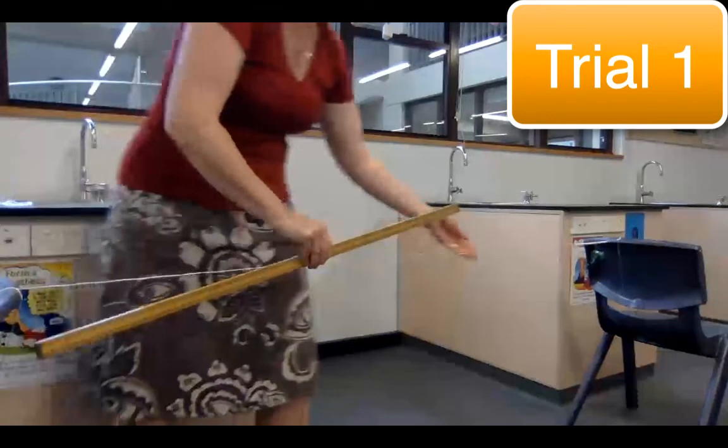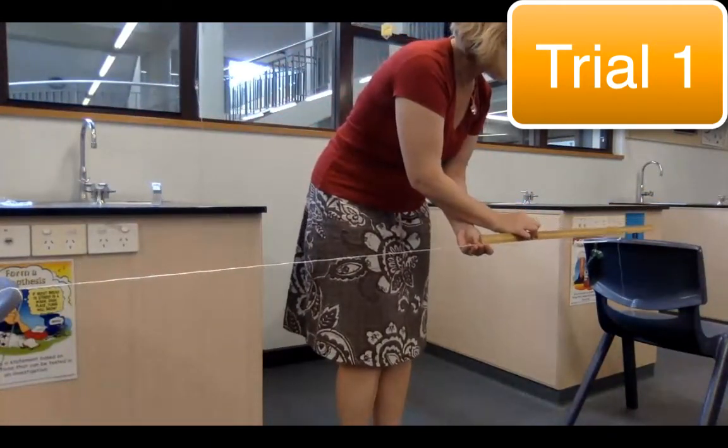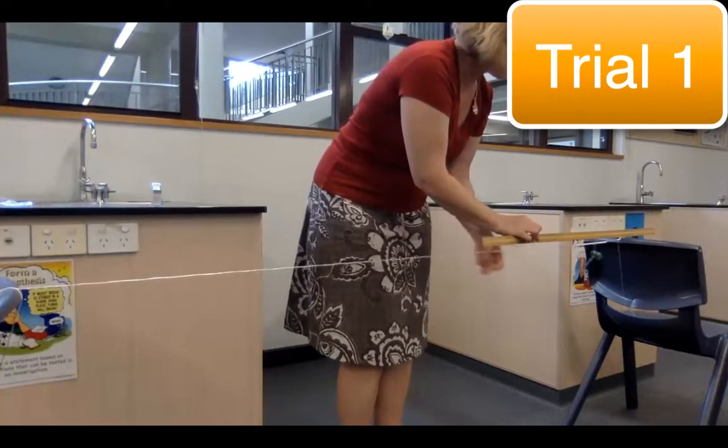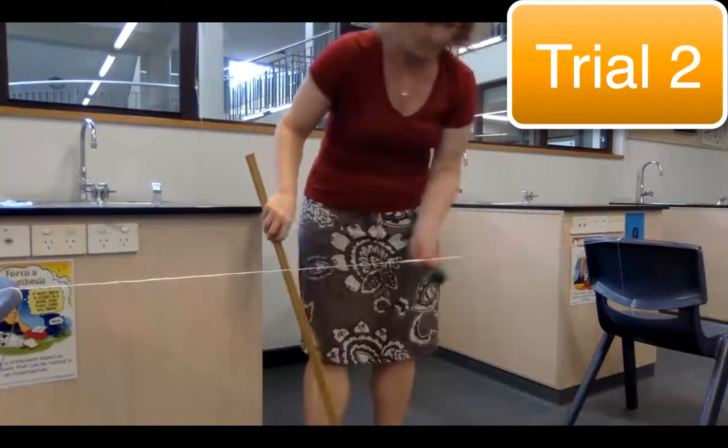Use a metre rule to see how far the thrust from one breath has pushed your balloon on its straw along the string. Measure that, put it into your results table and then take your straw back to the starting place.